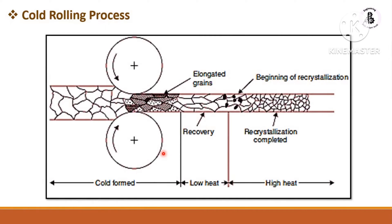In the cold working process, the material is below the recrystallization temperature and passed between two pressurized rollers. This is the initial microstructure of the material. Once it passes between the two pressurized rollers, compression stress is applied onto the material. Due to that compression stress, the grains are permanently elongated or compressed, requiring a high amount of stress to permanently change the grain structure.